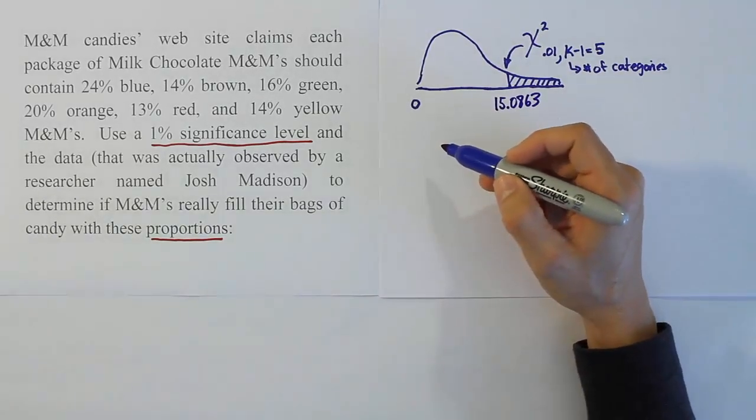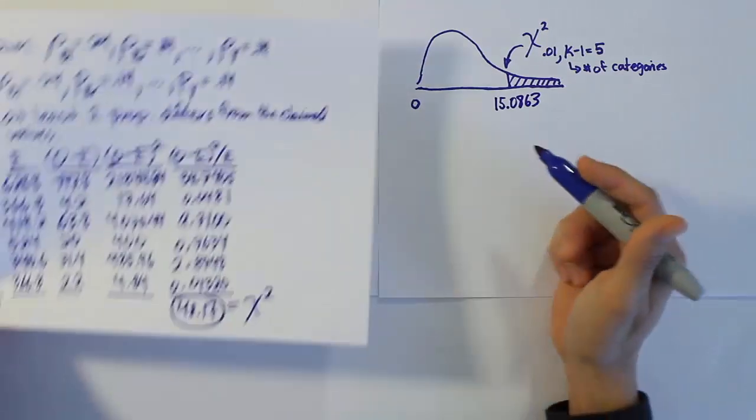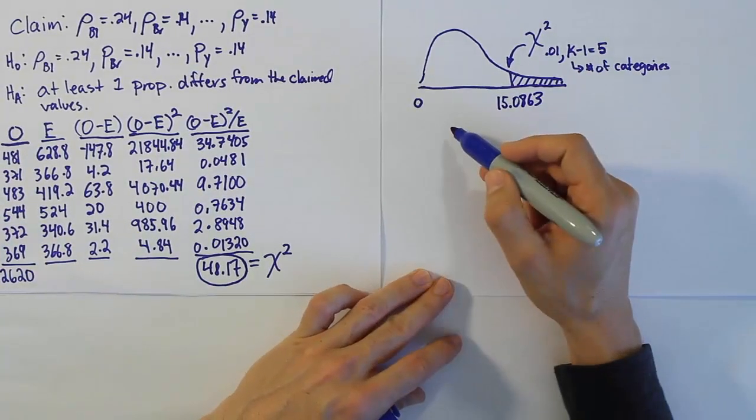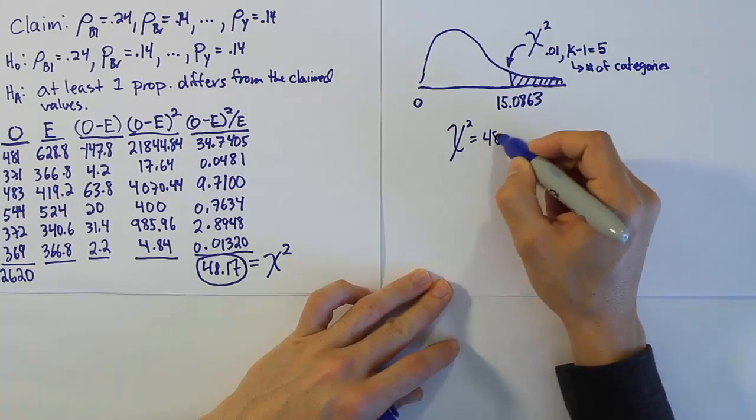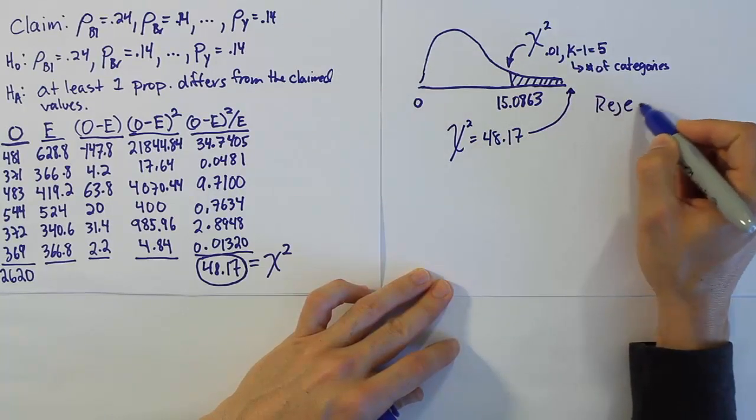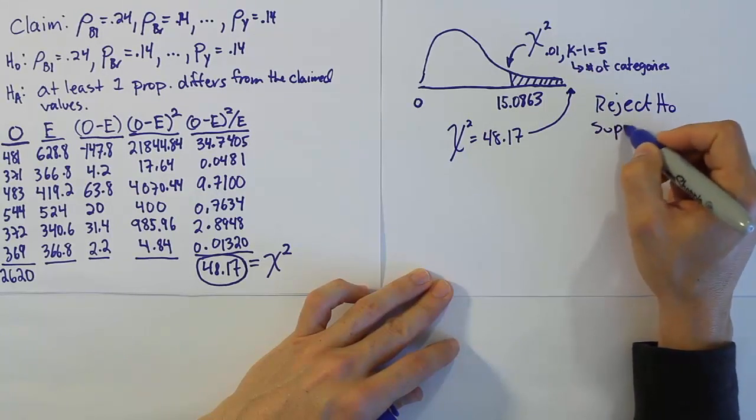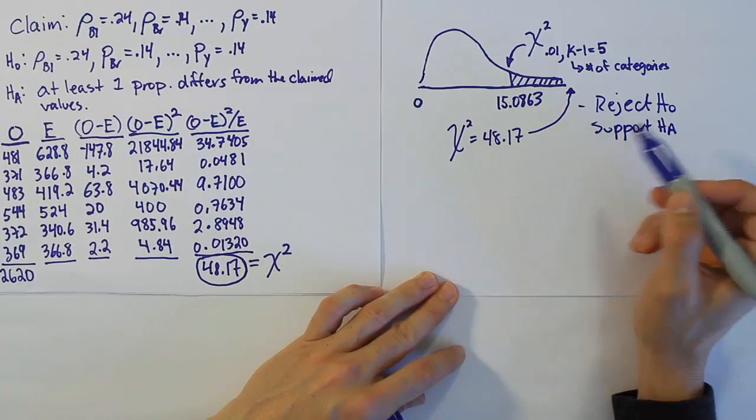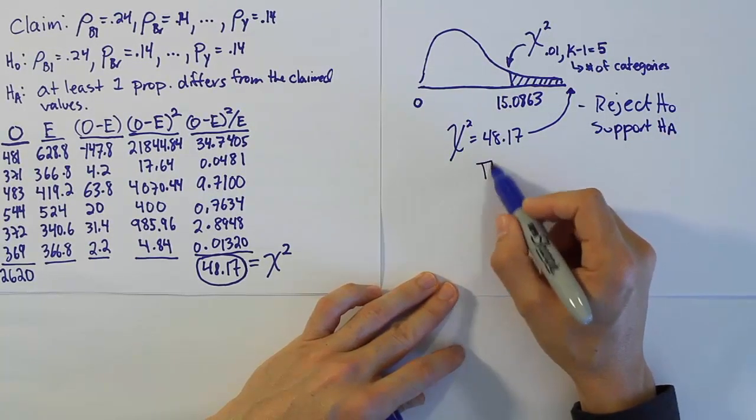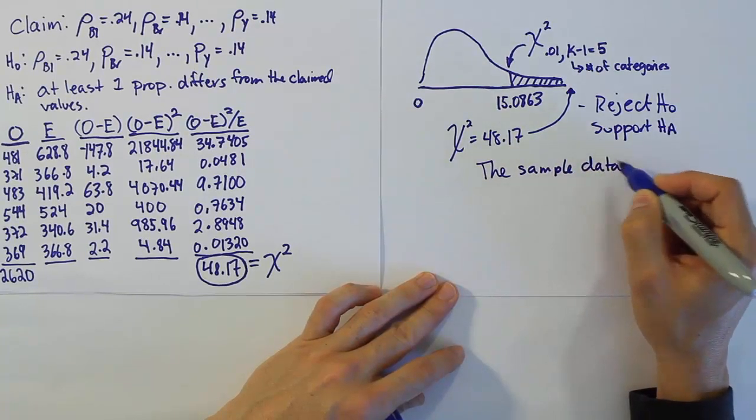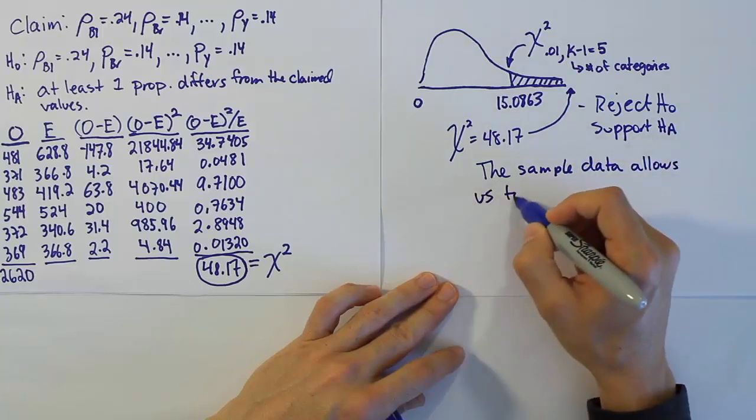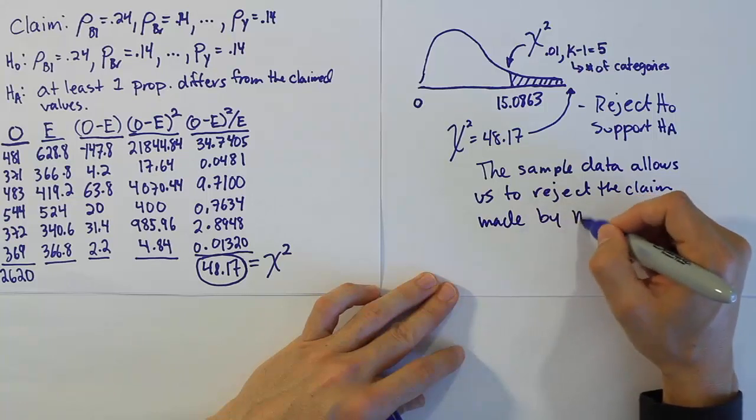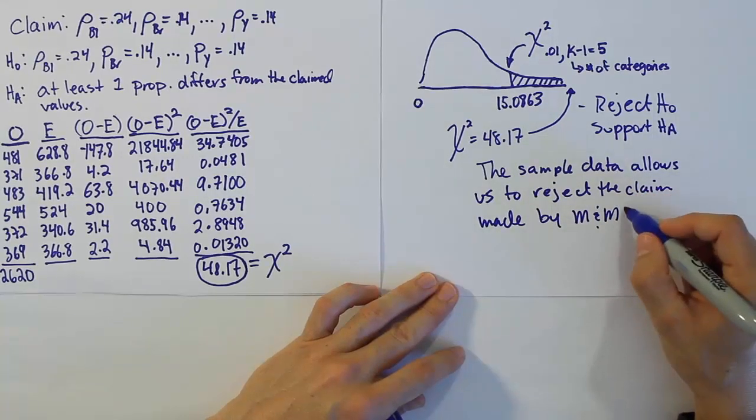If our chi-squared test statistic is larger than that, we reject H0. Our chi-squared test stat was 48.17, which means it's certainly in the rejection region. We reject H0 and therefore support HA. Since our claim is actually H0, we say the sample data warrants a rejection of the claim made by M&M's company.